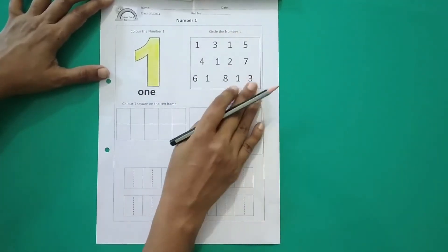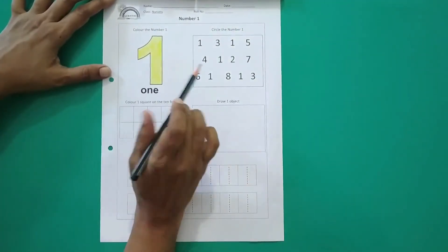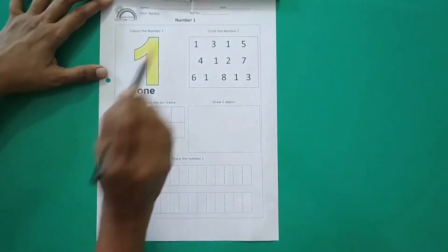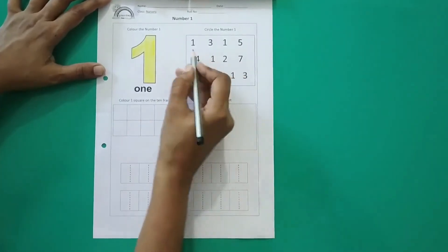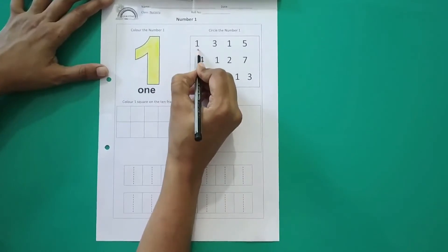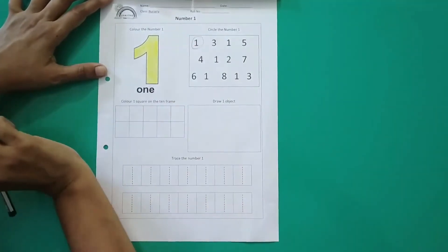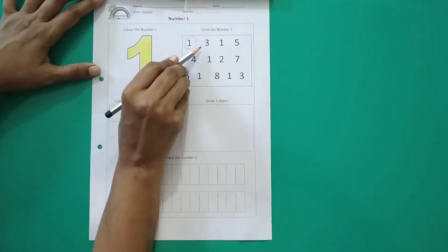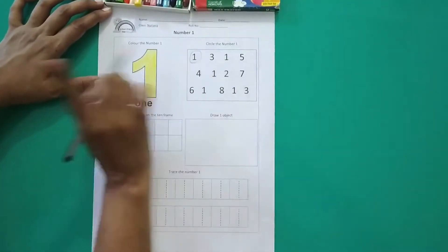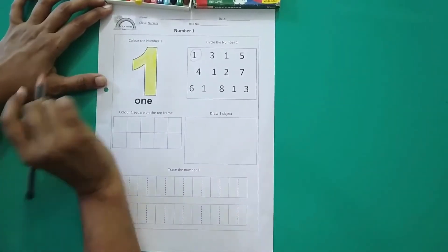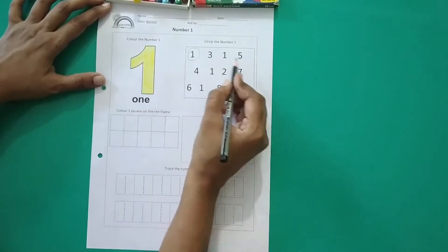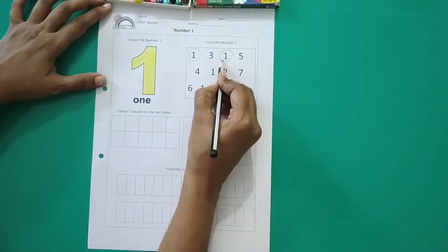Now there are many numbers here. Bahut sare numbers hai. Hum kis ko circle karenge? Number 1 ko circle karenge. So let's see. Here what is the first number? This is number 1. So I will circle it. Which number is this? This is number 3. So should I circle number 3? No. I have to circle number 1. So where is number 1? Here. Here I see number 1. So I will circle number 1.